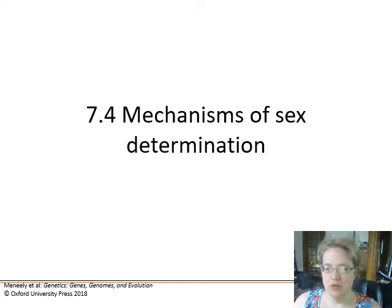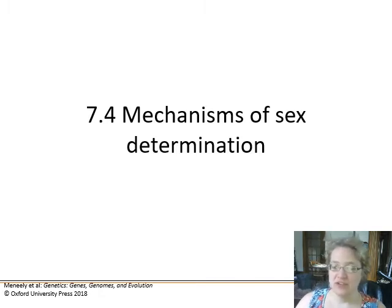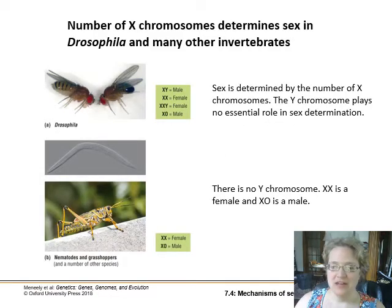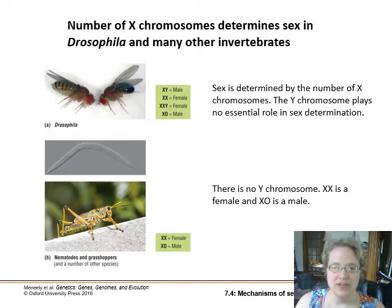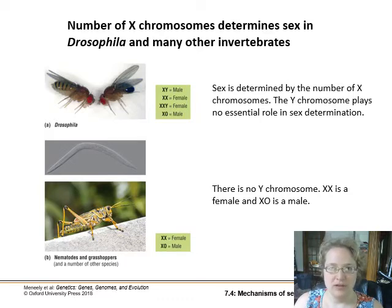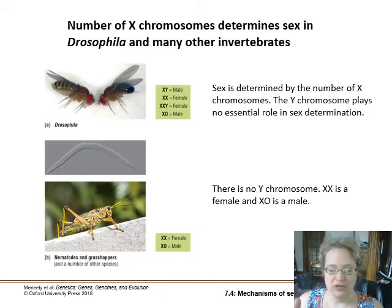As we discovered in our white eye crosses in the last lecture, sex determination in flies is quite a bit different than in humans. In Drosophila and other invertebrates, they are actually counting the number of X chromosomes present in the cells — that's how sex is determined, as opposed to the Y chromosome. In nematodes and grasshoppers, there isn't even a Y chromosome at all; having two X's is female and only one X is male.